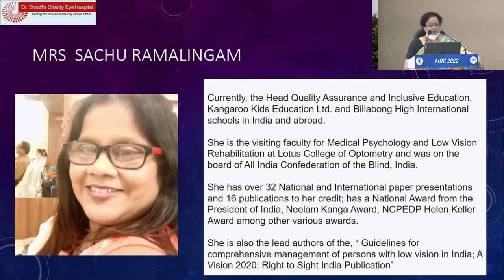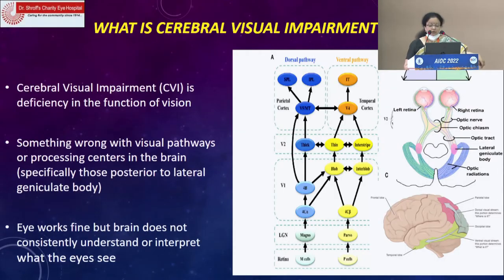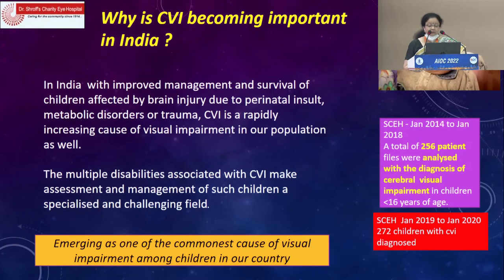Cerebral visual impairment is becoming increasingly important. It is a deficiency in the function of vision where something is wrong with the visual pathways or processing centers in the brain, specifically those posterior to the lateral geniculate body. The eyes work fine but the brain does not understand or interpret what the eyes see. In India, with improved management and survival of children affected by brain injury due to perinatal insult, metabolic diseases, or trauma, CVI is becoming an increasing cause of visual impairment, and the multiple disabilities make assessment and management a specialized, challenging field.